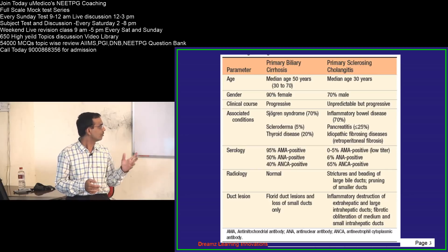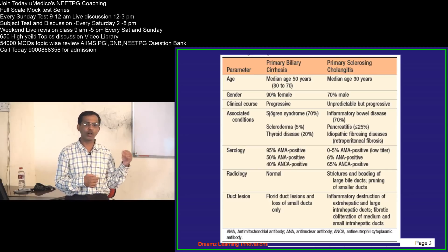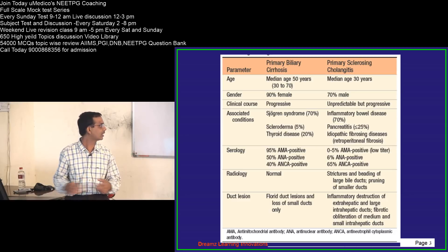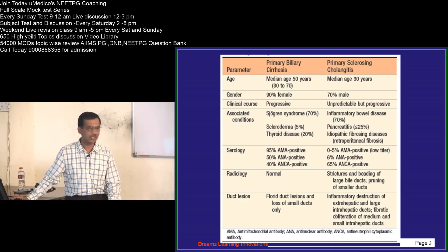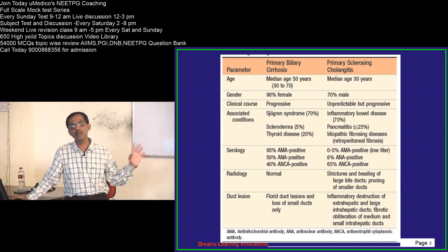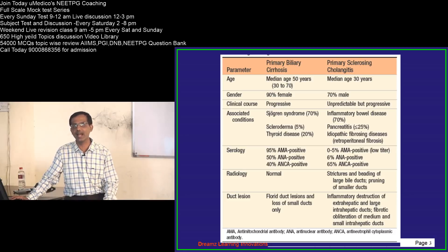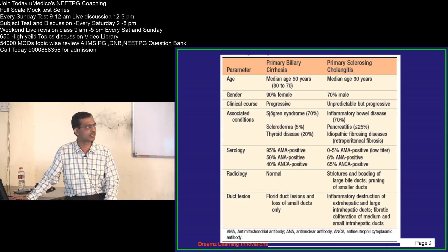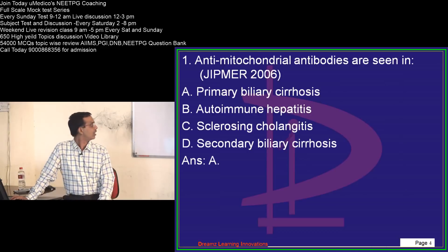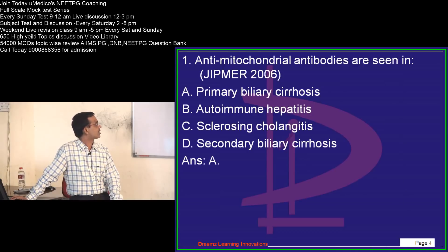There can also be changes in medium and smaller intra-hepatic ducts in PSC. These are very important points to remember about PBC and PSC, and many MCQs can be solved from this table. The answer for our first question is primary biliary cirrhosis for antimitochondrial antibodies.